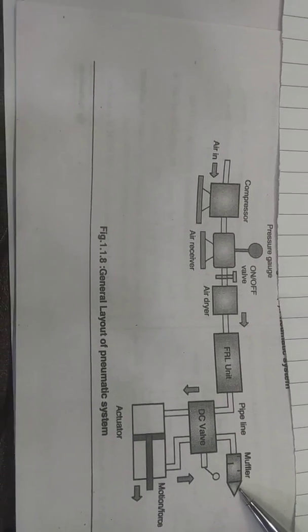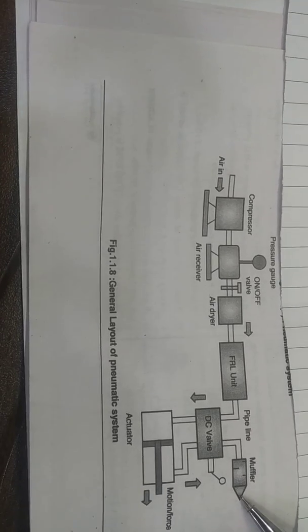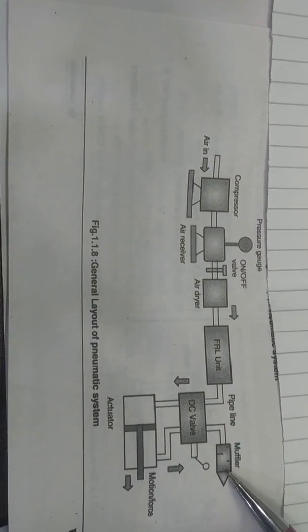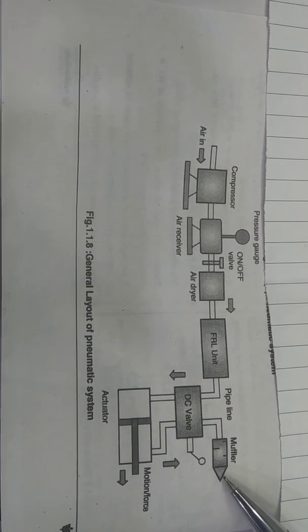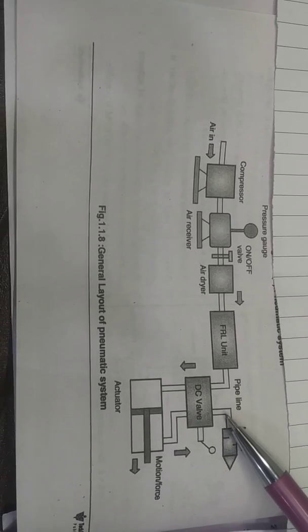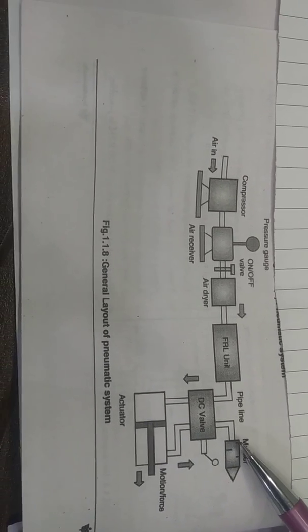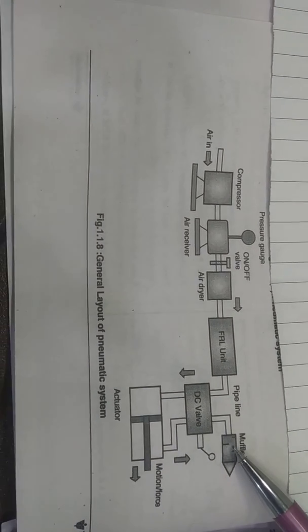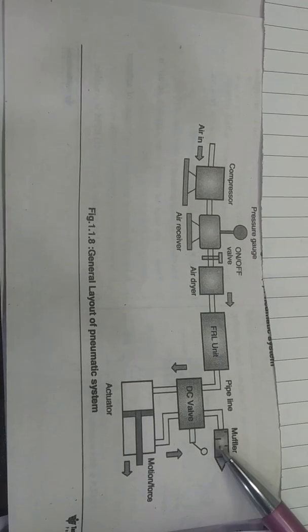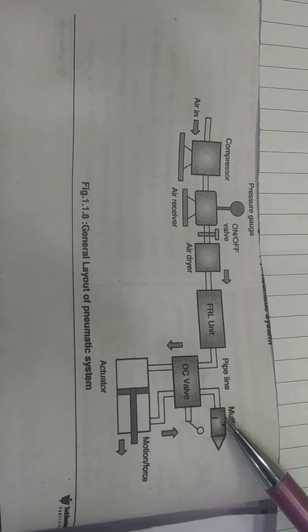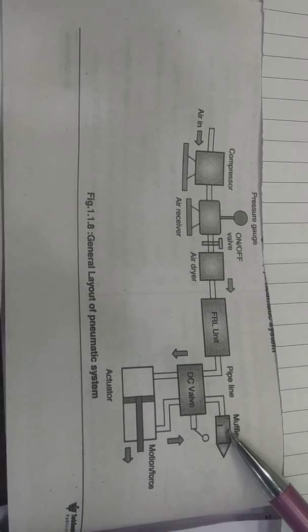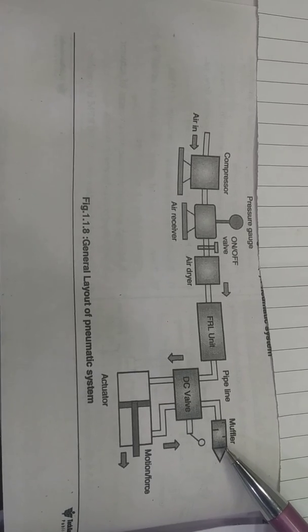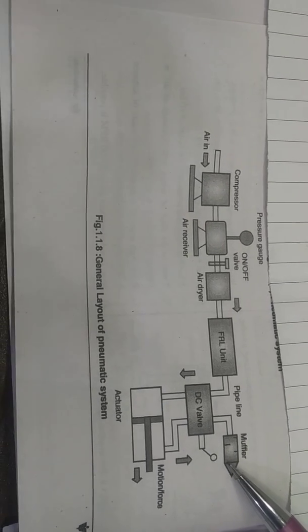The next component is the muffler, or silencer. The main function of the muffler is to reduce the noise. Inside the muffler, a number of baffles are provided. When air with high velocity enters the muffler, it strikes the baffles, its velocity gets reduced, and as a result its noise is less.